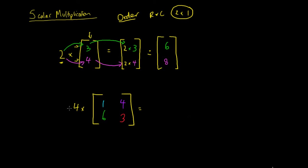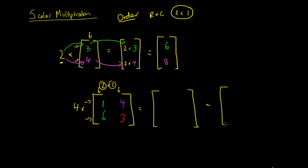We're going to do another example. We've got another matrix down here. This is a 2 by 2 matrix because it has 1, 2 rows and 1, 2 columns, so it's 2 by 2. Our resulting matrix is also going to have to be a 2 by 2 matrix. We follow the exact same process: we have this constant out the front, 4, and we're multiplying the entire matrix by 4. So we're going to multiply everything in there by 4: 4 times 1, 4 times 4, 4 times 6, and 4 times 3.